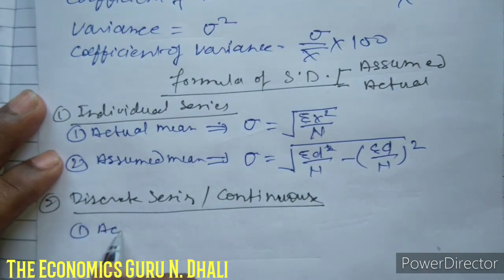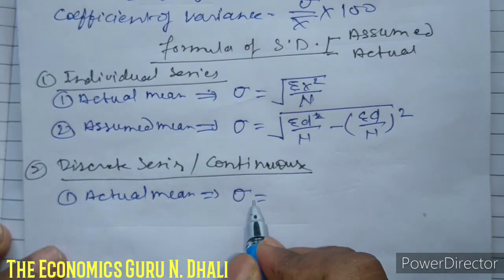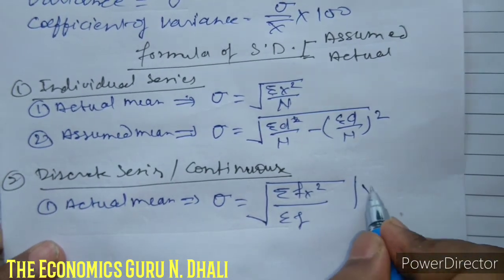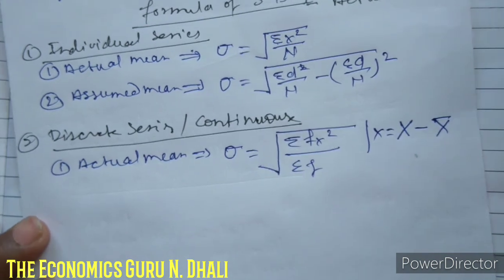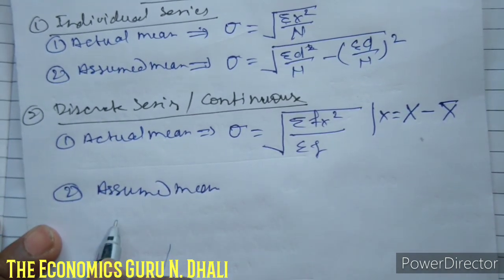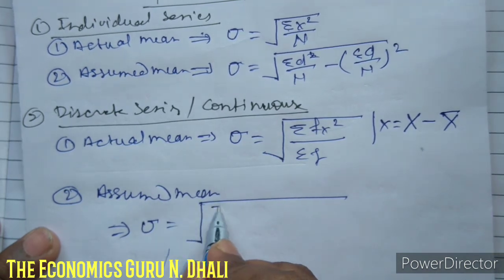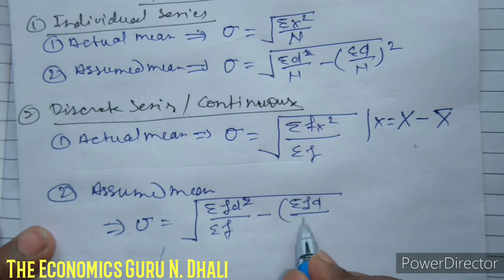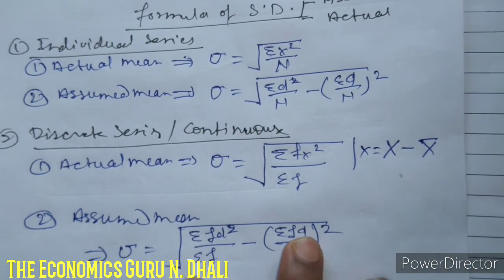The first formula for when we calculate by actual mean is: standard deviation equals sigma f x squared upon sigma f, where x is calculated by mid-value minus actual mean. The next formula is for assumed mean — first we calculate the assumed mean. We have all videos for all formulas; subscribe my channel to see all formula derivations. First learn all the formulas, and then we discuss the calculation of standard deviation using all these formulas. These are the formulas for calculating standard deviation. Thank you.